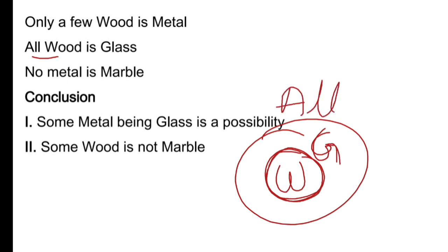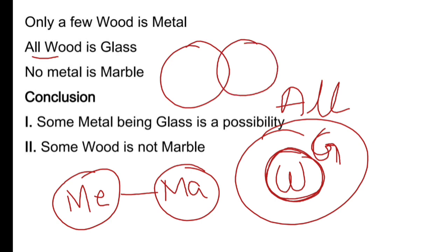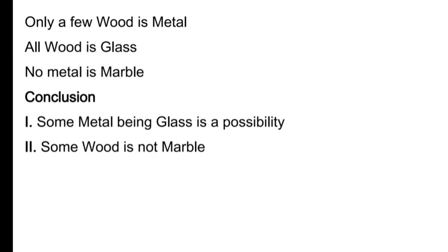Ab baat karte hain 'no metal is marble' ke liye — agar 'no' ka relation hai metal aur marble ke beech mein, toh ye dono alag-alag honge. Yeh ho gaya 'no' ka diagram. 'Some' ke liye hum aise show karte hain — iska kuch part iska bhi part hai. Yeh ho gaye teen sabse basic: all, no, aur some.